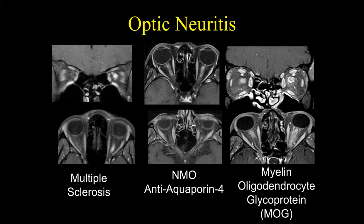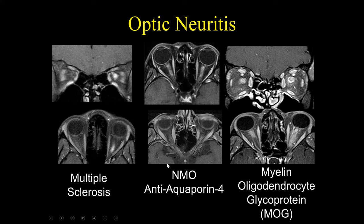There are now different ways to look at primary demyelinating processes involving the brain. When I grew up, everything was sort of MS. But now we can look at specific molecular markers and different causes of demyelinating processes. The most common is still multiple sclerosis, but we can also look for neuromyelitis optica — associated with anti-aquaporin-4 — and myelin oligodendrocyte glycoprotein, or MOG. All of these are different primary demyelinating processes of the brain.